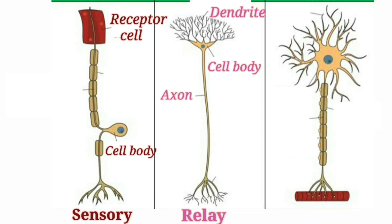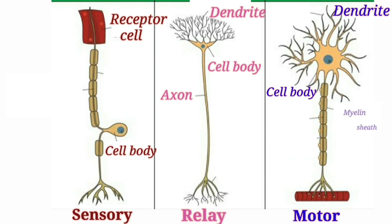The last type is the motor neuron. Motor neurons carry impulses from the main nervous system to an effector — muscles or glands. They have motor fibres and carry nerve impulses from the brain or spinal cord to the effector organ, that is muscles or glands, to bring them into action.